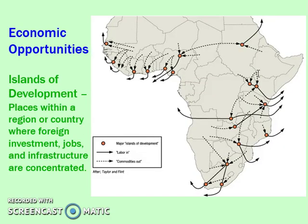Economic opportunities in regional migration are often tied to islands of development — an area in a country where either the government or a company establishes strong infrastructure: roads, schools, housing, ports, and airports — making it feel like a very developed area. But if you stepped outside that city, you wouldn't see that level of development. People come to these islands of development for jobs. In Africa, for example, companies or governments set up strong infrastructure in small areas of the country to encourage people to go there.